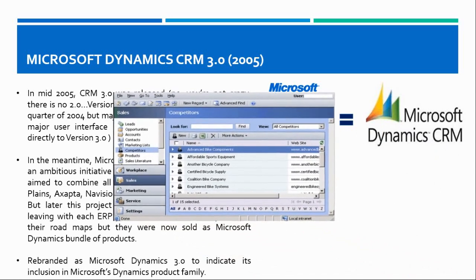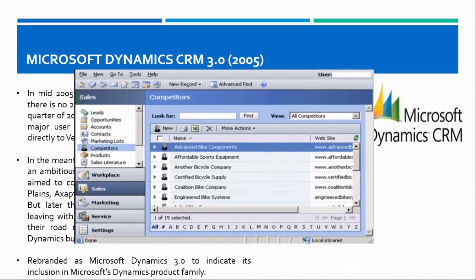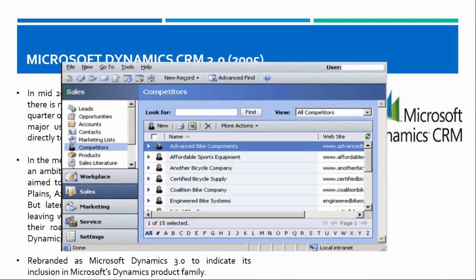This is what the home page of Microsoft Dynamics CRM 3.0 looked like. The navigation bar from the bottom is now replaced with a navigation pane on the left-hand side. You can now navigate to Workplace and Sales, and a new Marketing module was added with this version — there was no marketing module before. Below the marketing module you can navigate to the Service module, and at the end you can also navigate to the Settings area of the application.